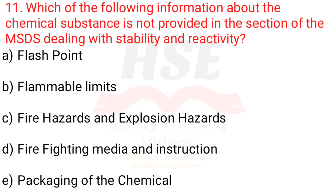Question 11: Which of the following information about the chemical substance is not provided in the section of the MSDS dealing with stability and reactivity? A. Flash point, B. Flammable limits, C. Fire hazards and explosion hazards, D. Fire fighting media and instructions, E. Packaging of the chemical.